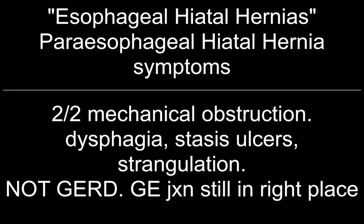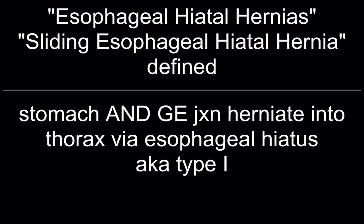Paraesophageal hiatal hernia (Type 2): all or part of the stomach herniates through the esophageal hiatus but the gastroesophageal junction stays in proper place. Symptoms: mechanical obstruction, dysphagia, stasis ulcers, strangulation — no GERD. Complications: hemorrhage, incarceration, obstruction, and strangulation. Treatment: surgical, due to frequency and severity of complications.